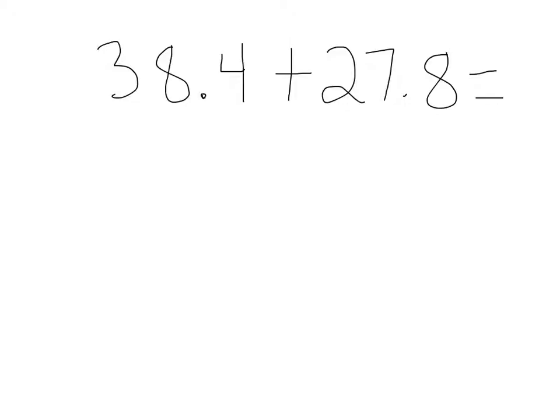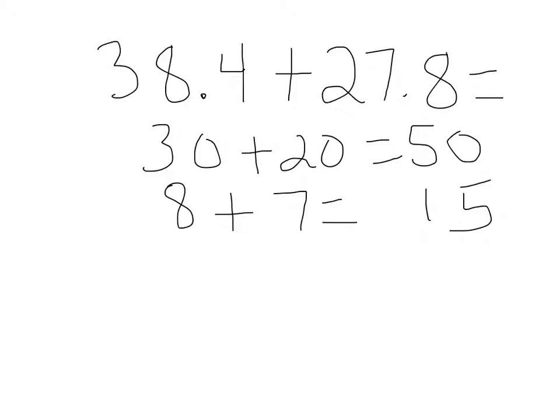So we do the exact same thing we did earlier in the year. We take our 30 and we add it to our 20 to get 50. We take our 8 plus 7 to equal 15, and then...